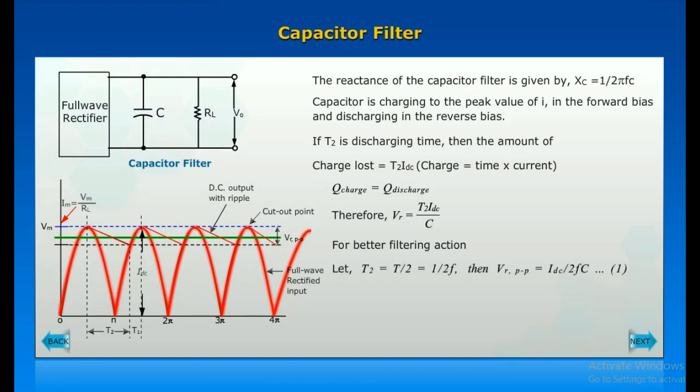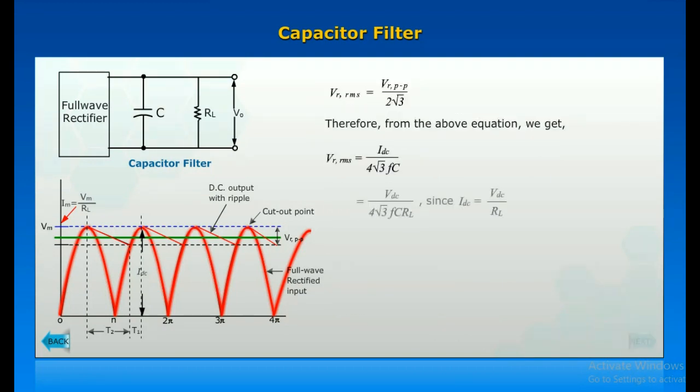For better filtering action, let T2 equal T by 2. The ripple waveform will be triangular and the RMS value of the ripple is given by the formula. Therefore, from the above equation we get the result. Therefore, the ripple factor is given as shown.